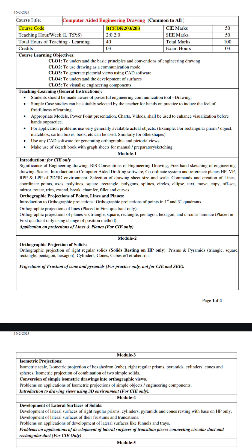Module 1 is related to basic things and projection of points, lines, and planes. In the question paper, you will not have any choice in selecting projection of points, lines, and planes. Initially there was a choice, but now they have removed it — they will ask either points and lines or planes.